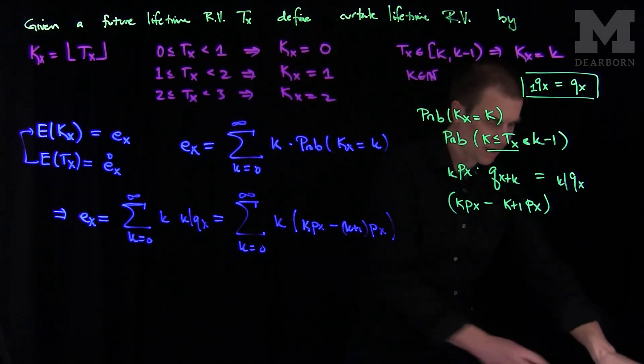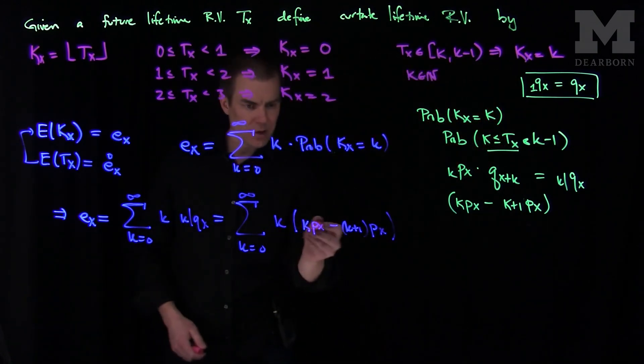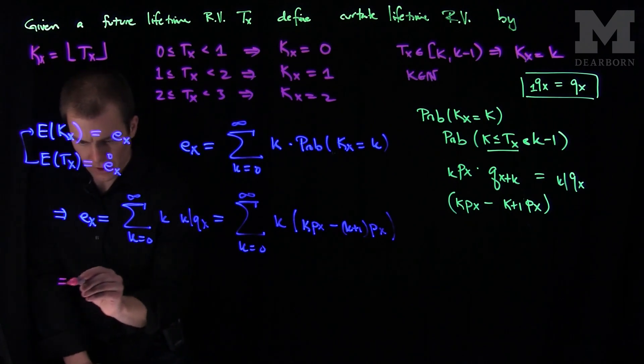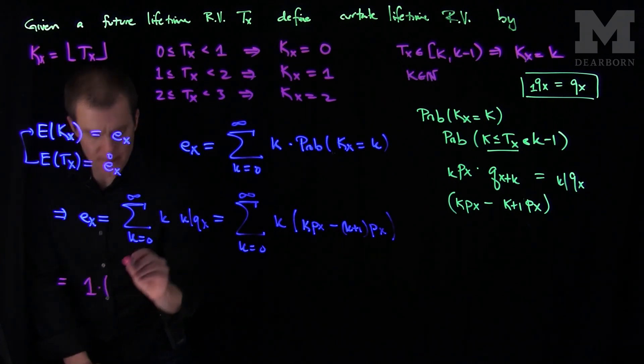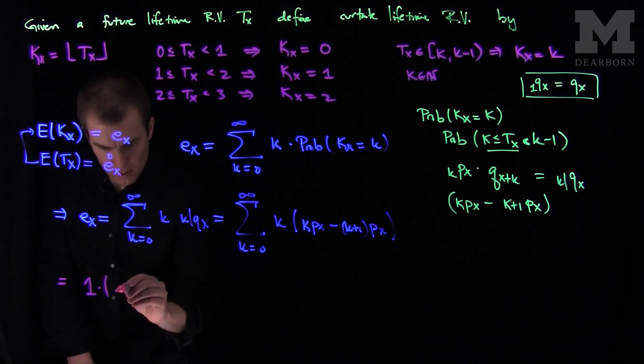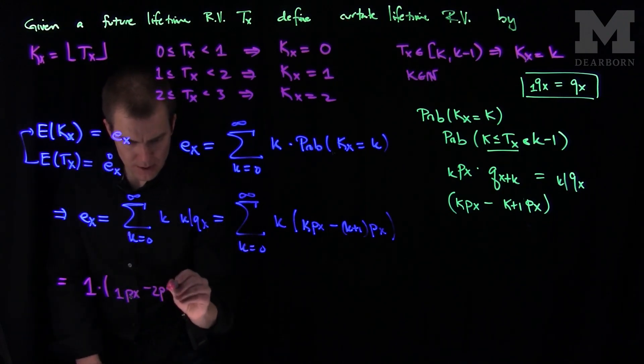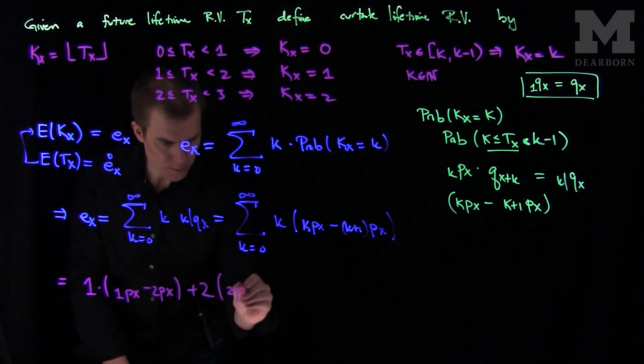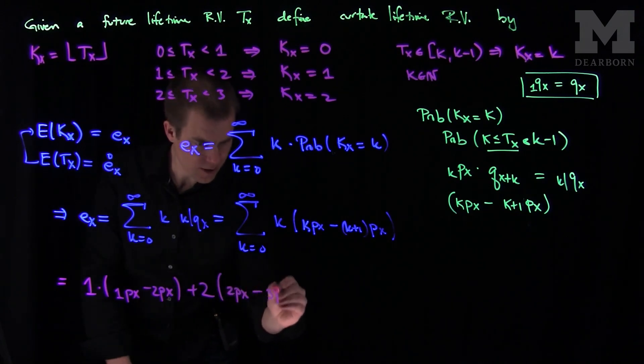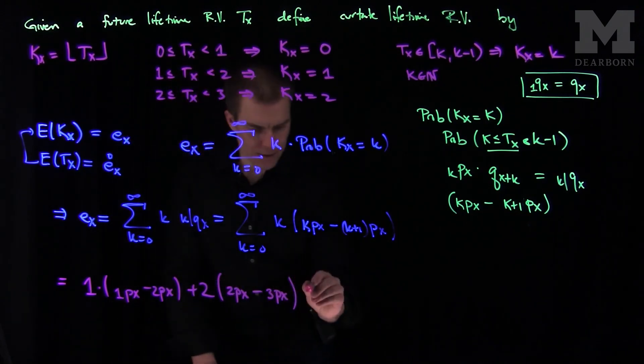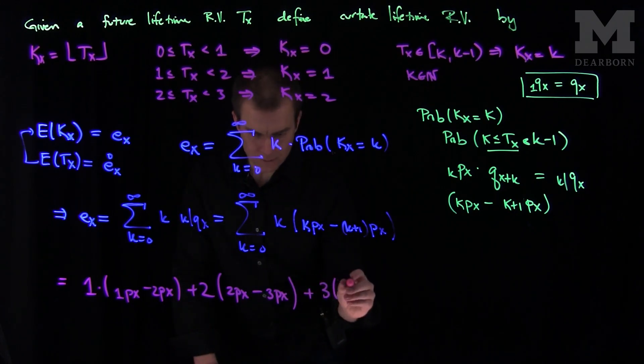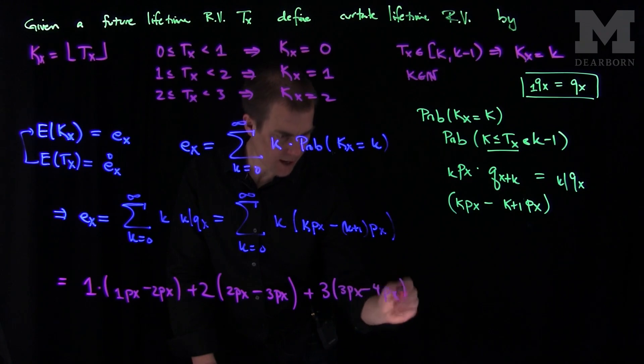Now let's write the first couple terms and see if we get some sort of pattern. So when we plug in k equals 0, we get nothing. When we plug in k equals 1, we get a 1, and that would be times 1 px minus 2 px plus 2, 2 px minus 3 px, and then plus 3, 3 px minus 4 px, etc.